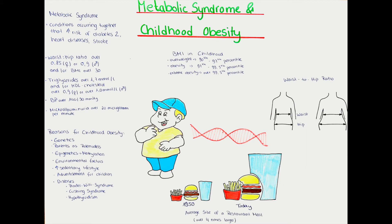I would like to take a closer look at the definition and diagnosis of childhood obesity. Obesity in children and adolescents is defined as a BMI over the 97th percentile in the age- and gender-specific chart, which can be found on the webpage of the WHO or the CDC. Overweight is classified as a BMI over the 90th to the 97th percentile. Obesity is classified as BMI over the 97th to the 99.5th percentile, and extreme obesity is classified as being over the 99.5th percentile.